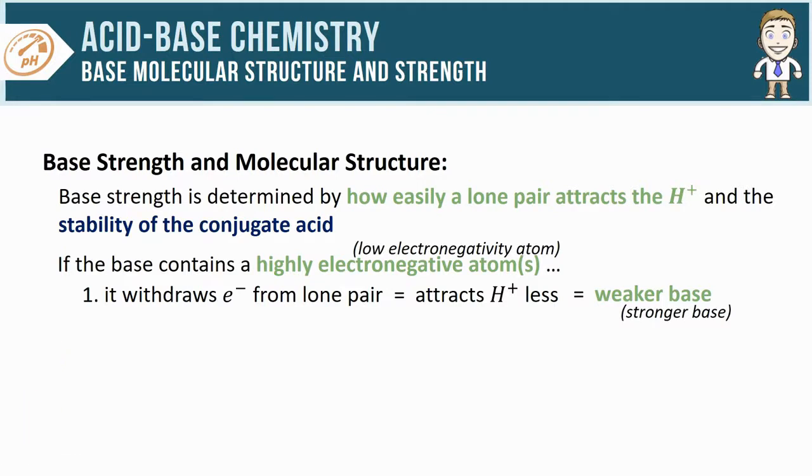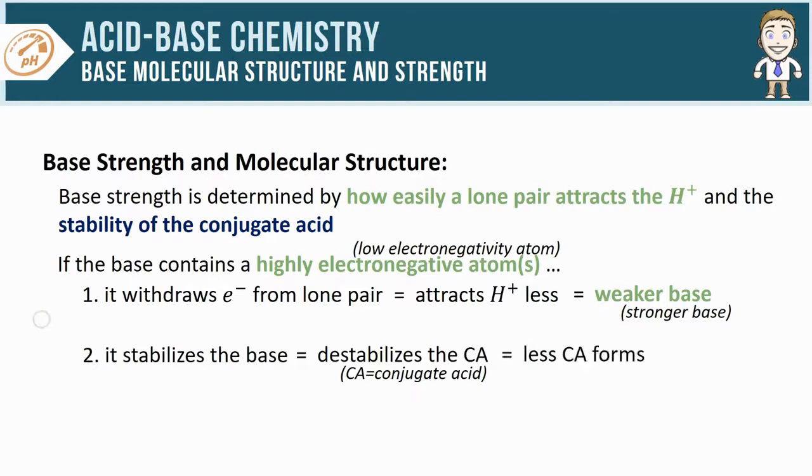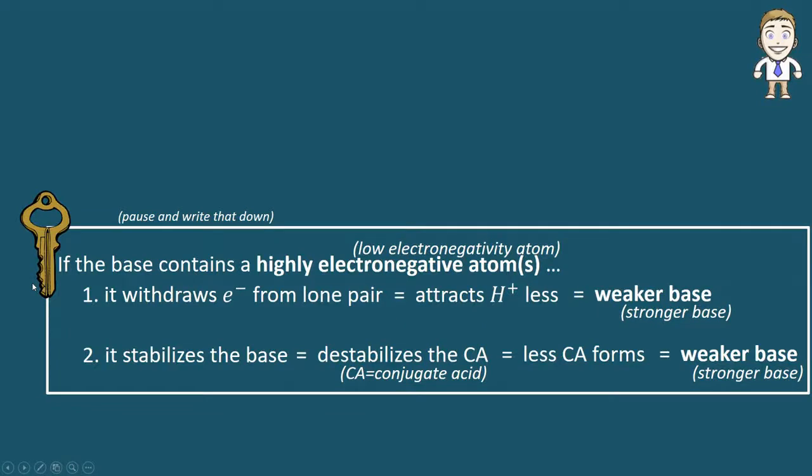Of course, the opposite is true: if you've got a low electronegativity atom, that's going to result in a stronger base. You could also look at this from the perspective of stability. That highly electronegative atom will stabilize the base while destabilizing the conjugate acid. This means of course that less conjugate acid is going to be forming, also leading to a weaker base, the opposite being true for low electronegativity atoms, which are going to end in a stronger base.